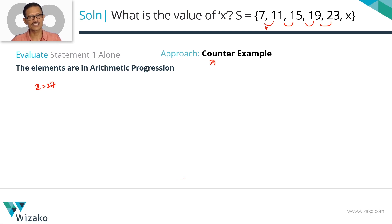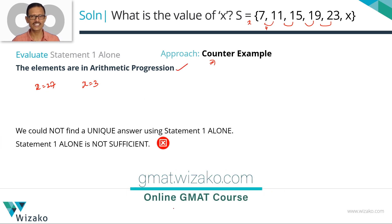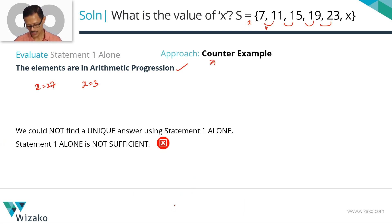Nowhere is it said in the definition of a set that the elements in the set are arranged in ascending order. x need not be a number to the right of 23. x could be a number to the left of 7 and these numbers could still be in an AP if x equals 3. If x equals 3, then 3, 7, 11, 15, 19, 23 will be in an AP with a common difference of 4. If x is 27, then 7, 11, 15, 19, 23, and 27 will be in an AP with the same common difference of 4. Is x equal to 27 or 3? It could be either and it would have satisfied this information. Using statement 1, we are not getting a unique value. We're getting two values but still we are not getting a unique value. So statement 1 alone is not sufficient.